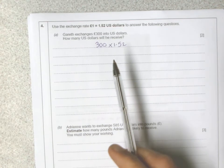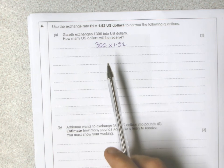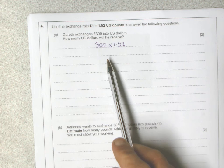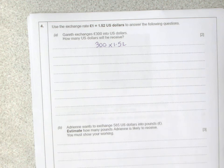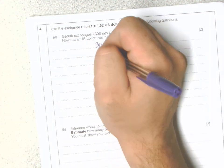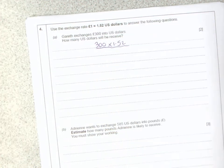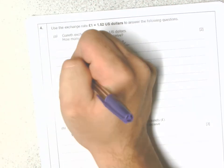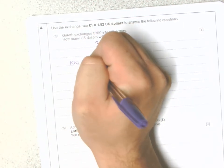This will give us our answer. Of course, this is a non-calculator paper, so we're going to have to think of a strategy to work this out. What I would do first is work out what 100 times $1.52 is.